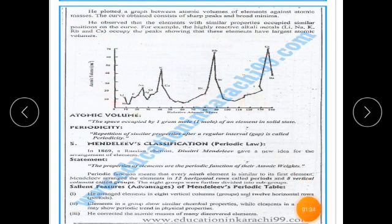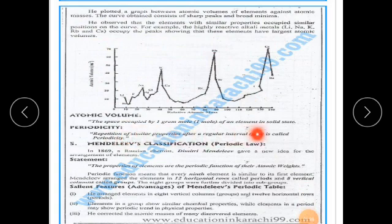Next, let us see atomic volume. Atomic volume is the space occupied by one mole of any element in solid state.